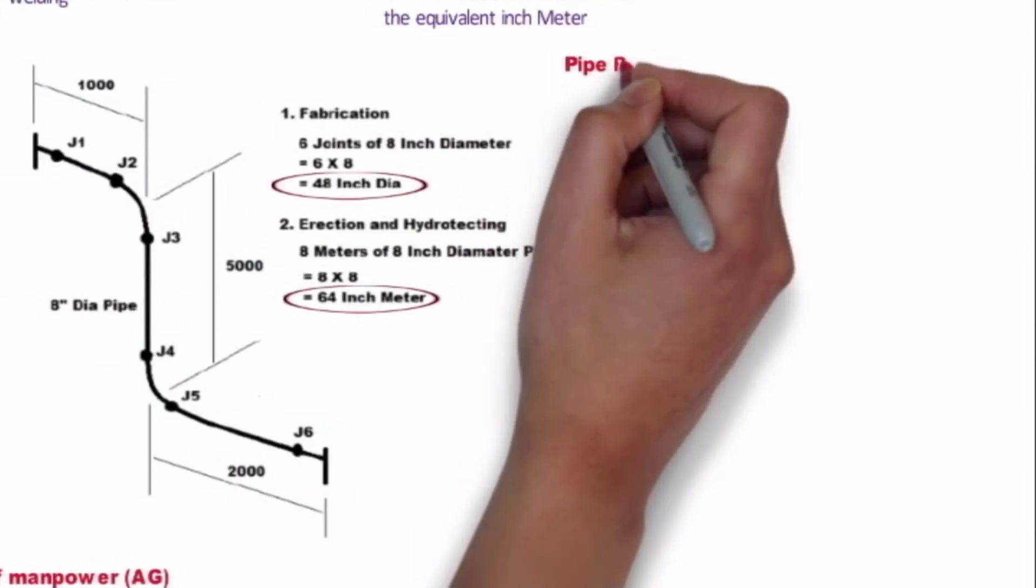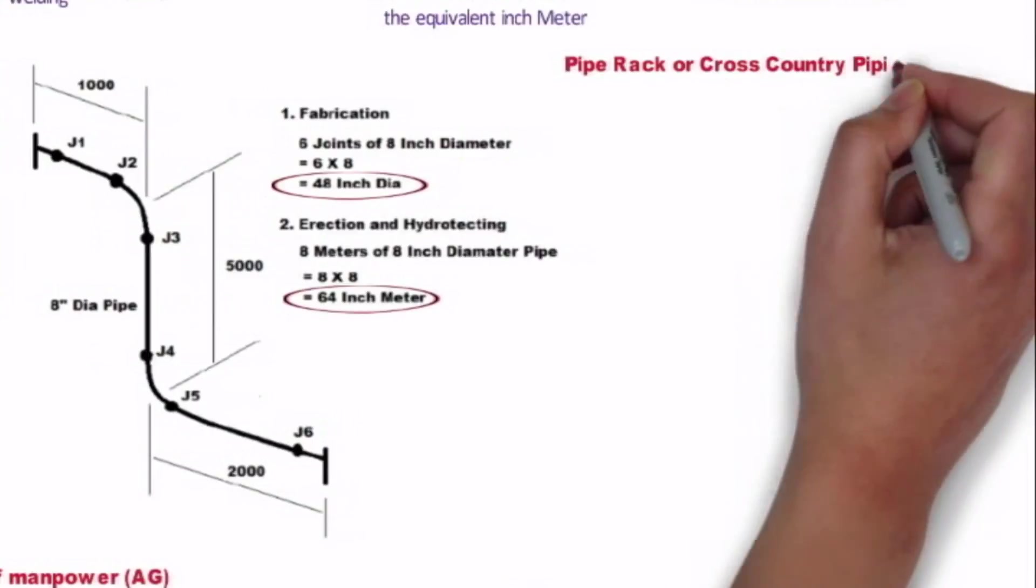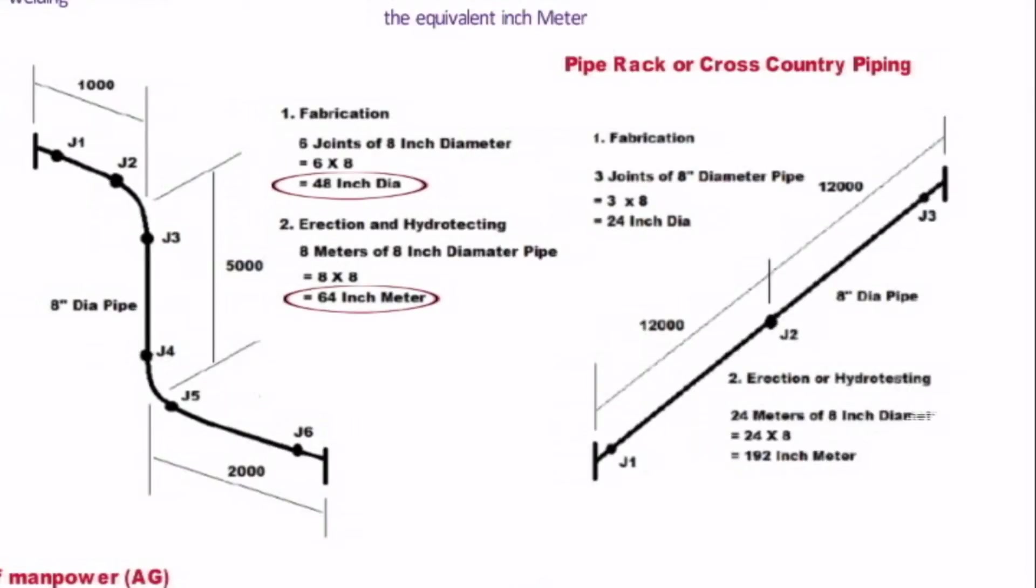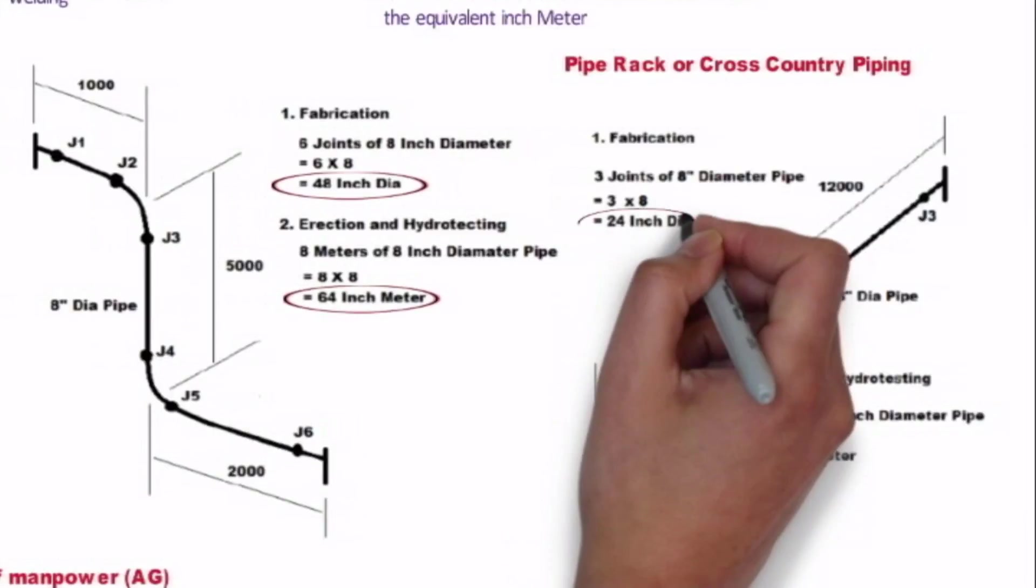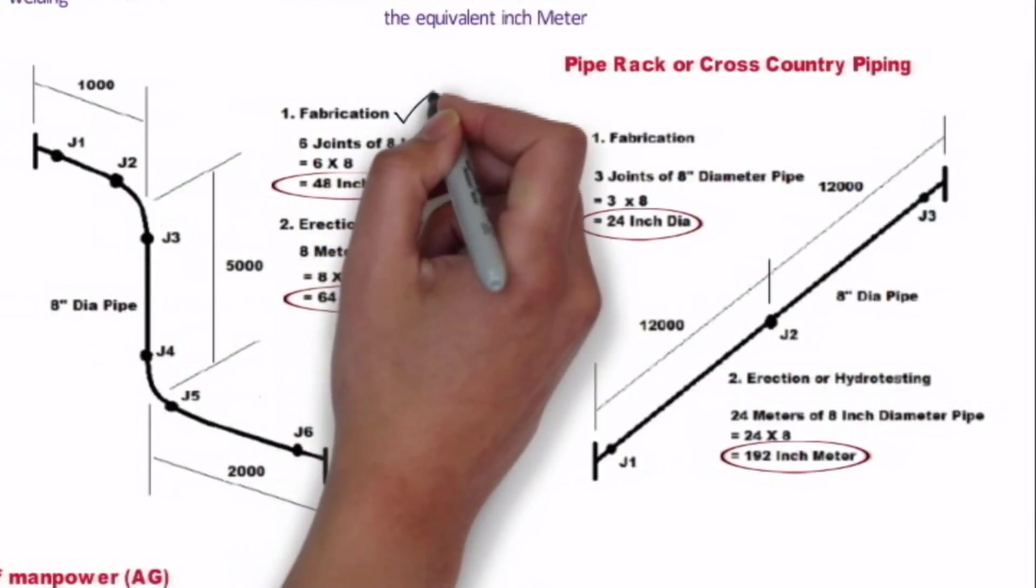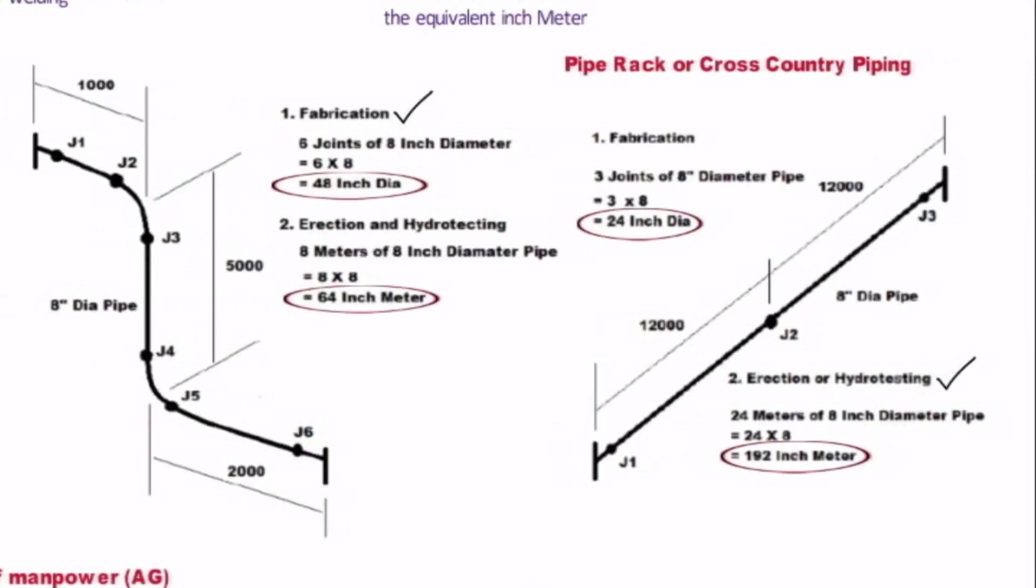In unit piping we have to connect to other equipment in that we have so many weld joints. But in pipe rack and cross country piping, piping work carried out to connect two units and are usually straight. The pipe in this area is less complex when compared to unit piping. For example, we can see here we have 24 meter pipe of 8 inch dia where we have only three joints. So in fabrication we have to multiply 8 into 3 and we get 24 inch dia pipe in fabrication. For erection and hydrotesting we have 24 meter pipe of 8 inch dia, that is 192 inch meter pipe erection. So in unit piping there is more welding and less erection, but in pipe rack and cross country piping there is less of welding but more in pipe laying.